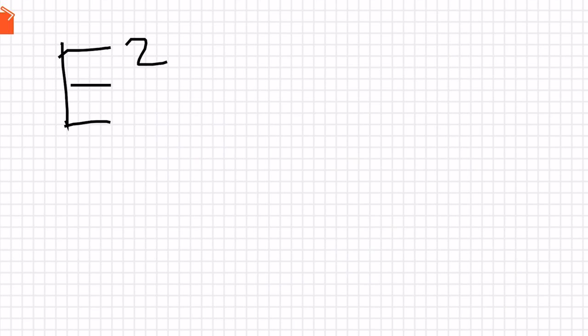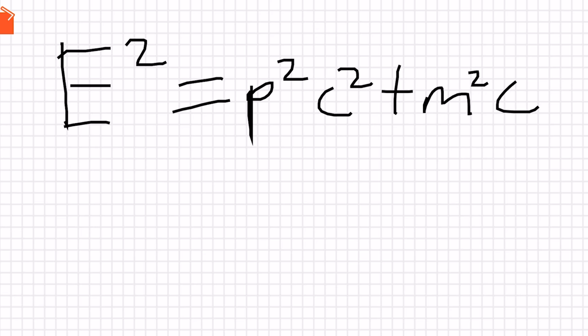The full equation is energy squared equals P, which is momentum squared, times the speed of light squared, plus m squared, which is mass squared, times the speed of light to the fourth power. When an object is moving through space to get its full energy, you have to account for its momentum and its mass.